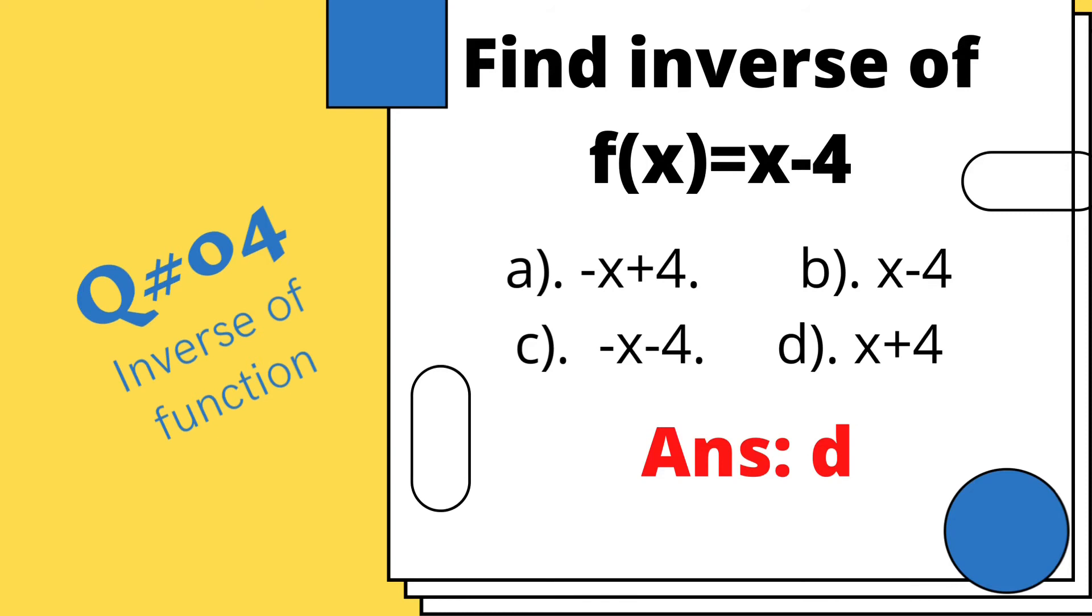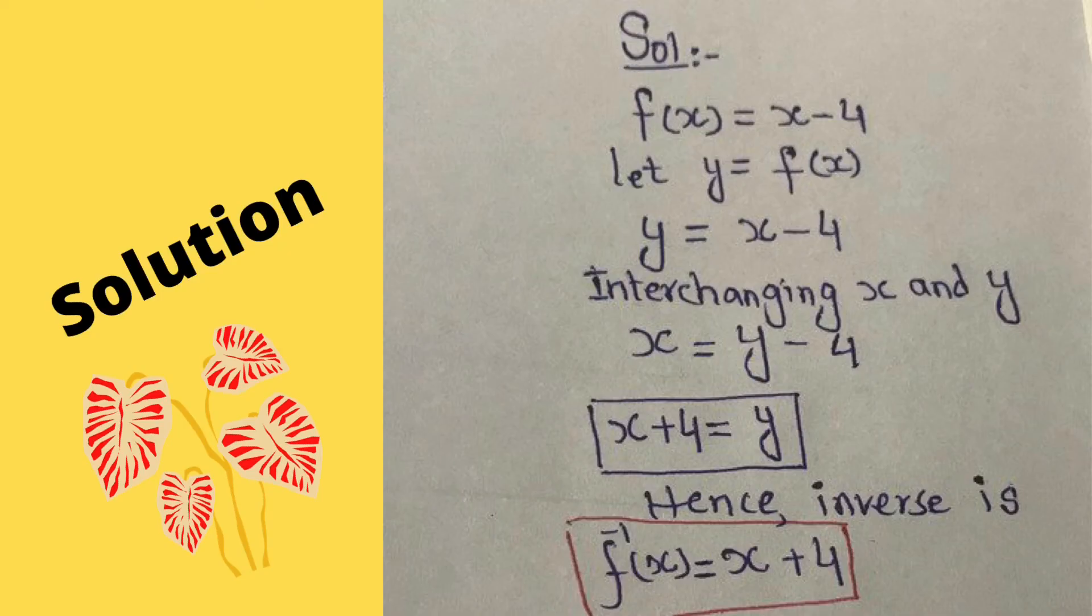f(x) = x - 4. We have four options given, and the correct one is D, which is x + 4. Now we check its solution. Given f(x), we suppose that f(x) = y, so y = x - 4. Now we interchange x and y, and we get x = y - 4. We add 4 to both sides of the equation, and we get y = x + 4. This is basically the inverse of the function.